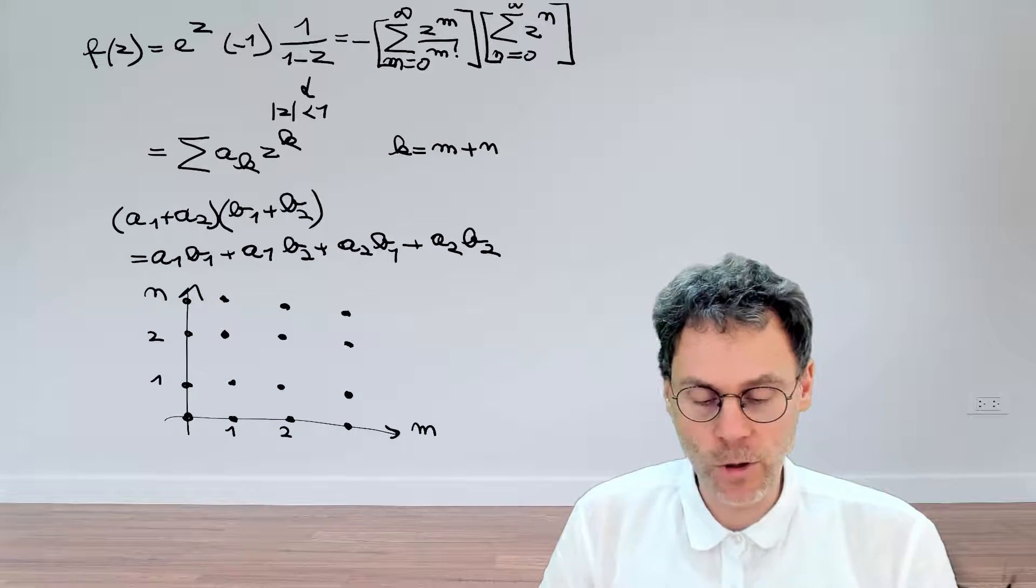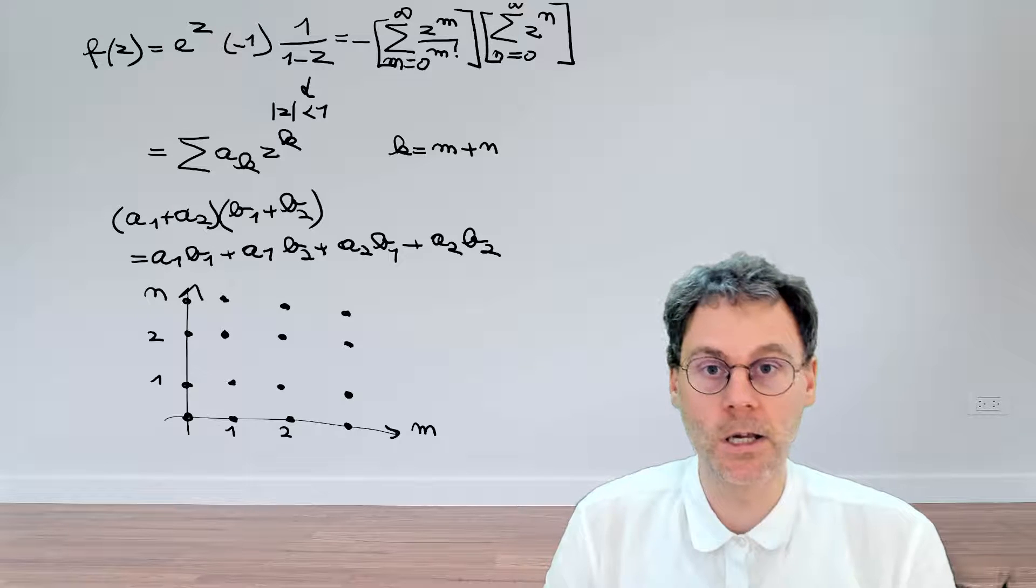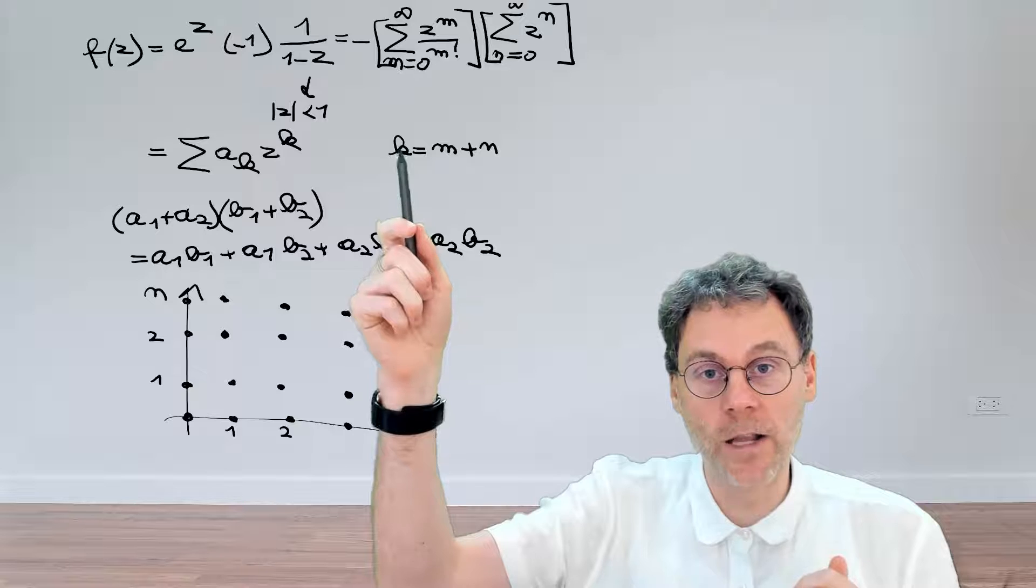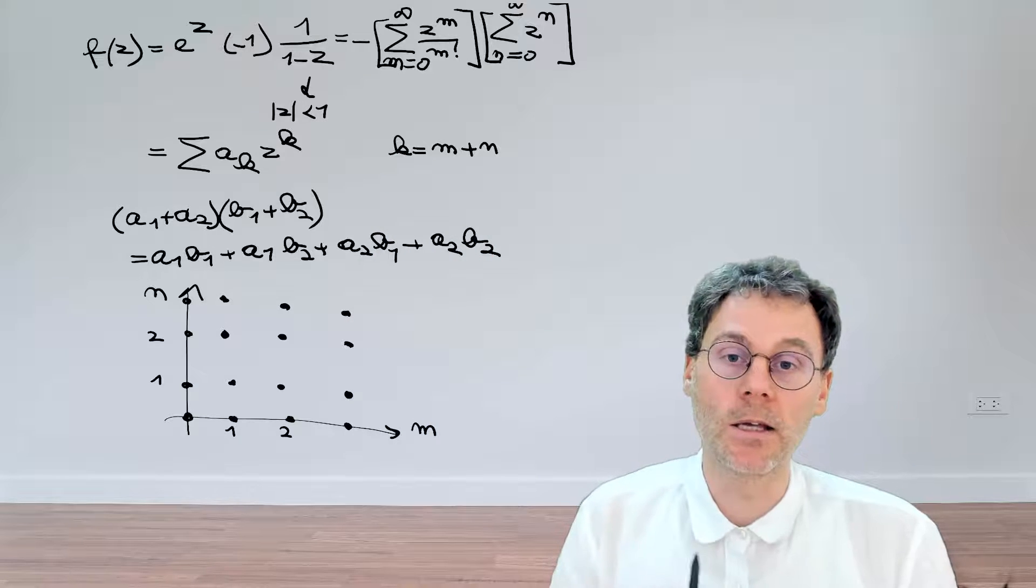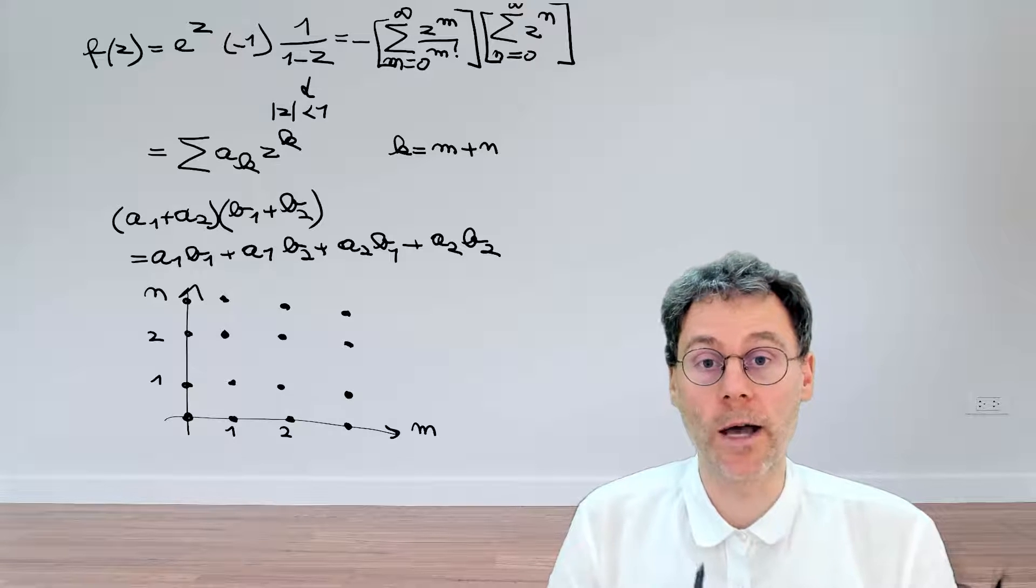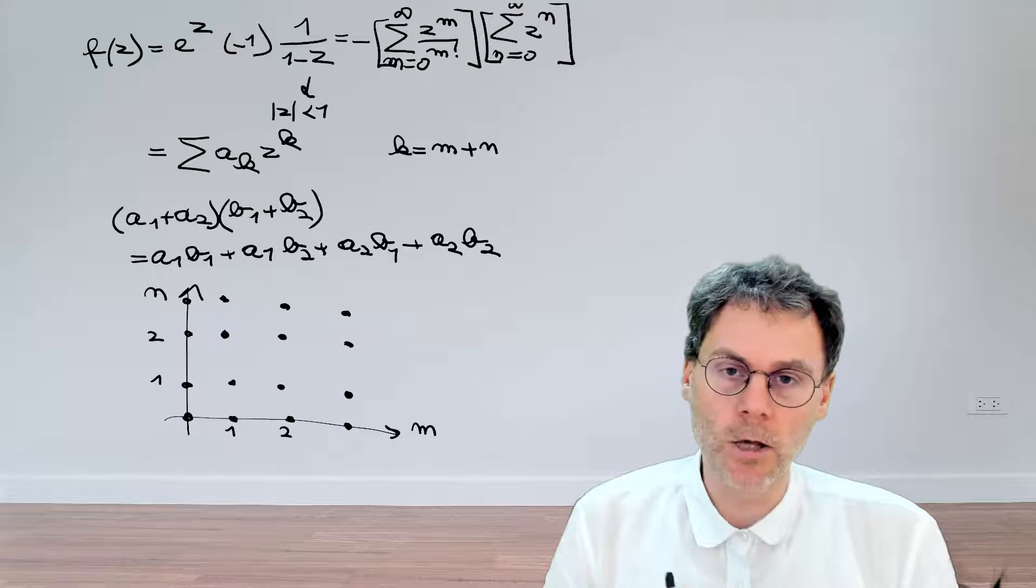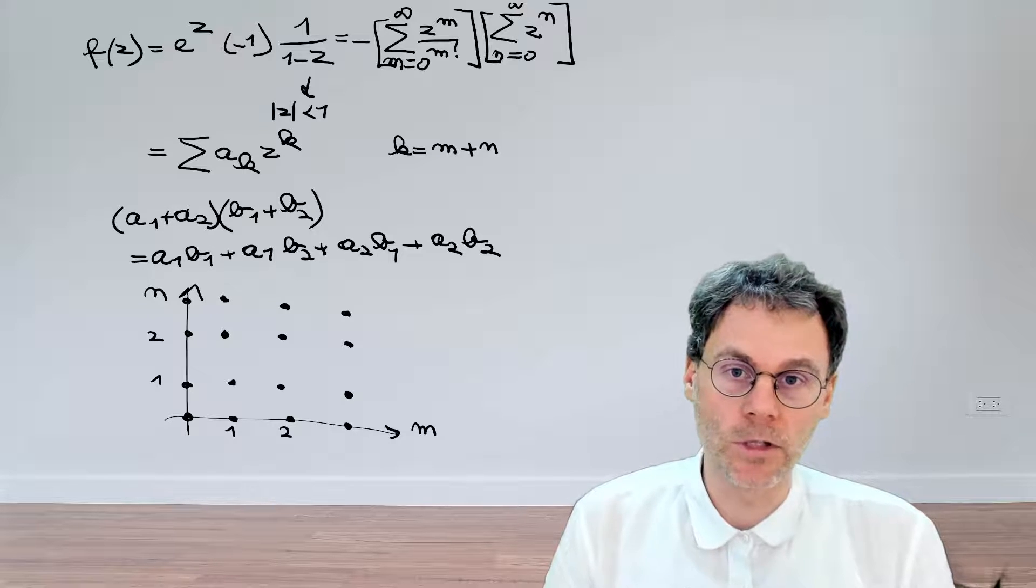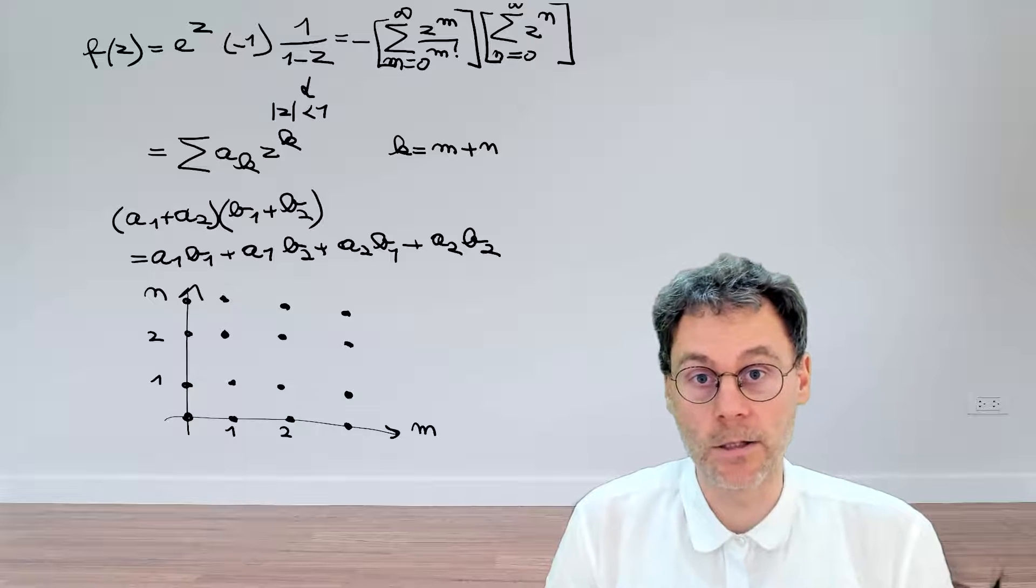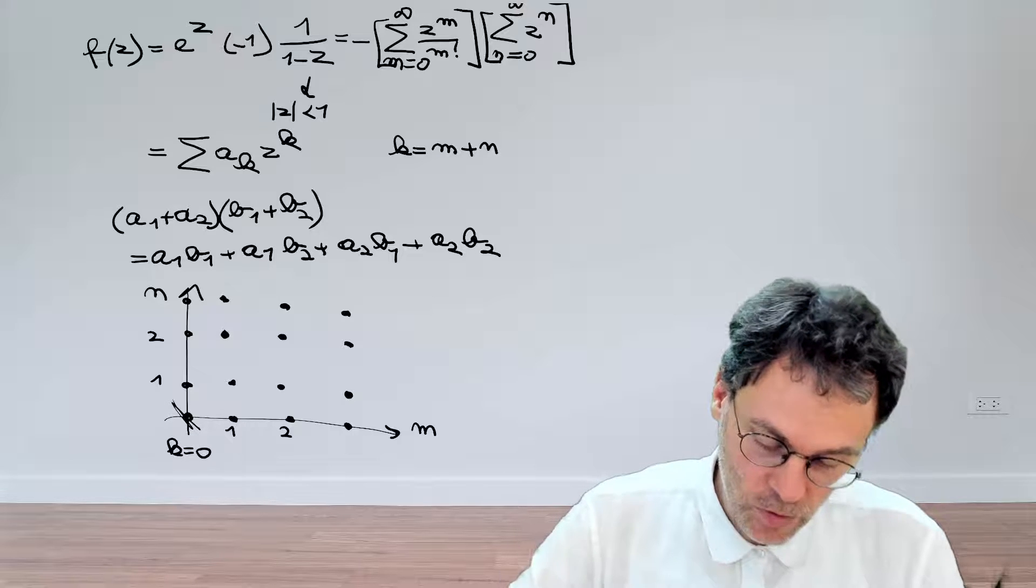But what we actually want to do is clean this thing up and collect all of the like powers of z. Basically, we're looking for all of the different values where k, namely m plus n, is equal to a given value. So let's just look where in this diagram do we find the same values of k. So looking at k equal to zero, you see in this diagram that that occurs when both m and n are equal to zero. So over here, this dot here is k equal to zero.